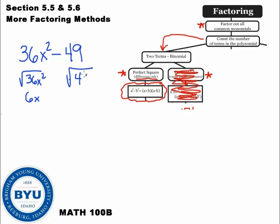And 49, square root of 49 is 7. So these are perfect squares. And we do have subtraction. So that's good. So we write two parentheses out. We're going to write 6x, 6x, and 7, 7, 1 with plus, 1 with minus. So that's an example.